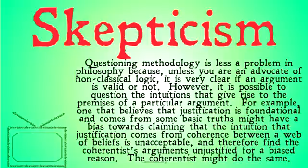For example, someone who believes justification is foundational — a foundationalist about justification — might have a bias towards claiming that the intuition that justification comes from coherence between a web of beliefs is unacceptable, and therefore find coherentist arguments unjustified for a biased reason. The coherentist, who has the opposite belief, might do the same. Because someone is already a foundationalist, they'll hold on to that belief and say your coherentist intuition is just wrong, and the coherentist will say the opposite — they'll end up butting heads, biasedly ignoring each other's intuitions because they already have a confirming intuition.